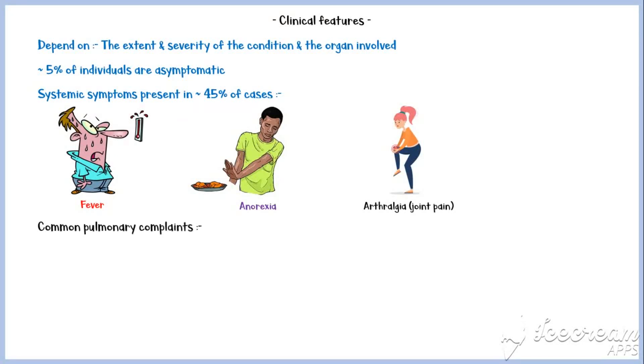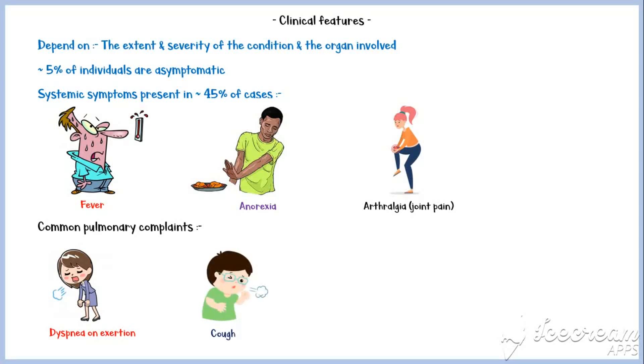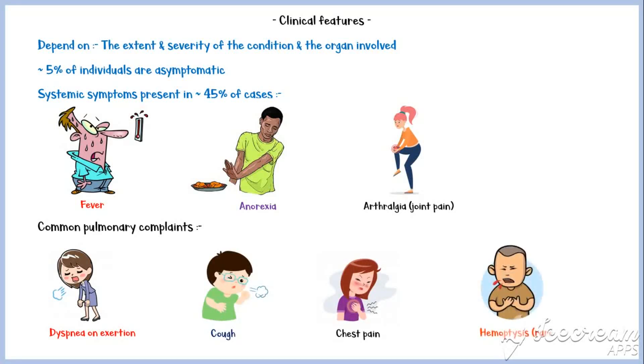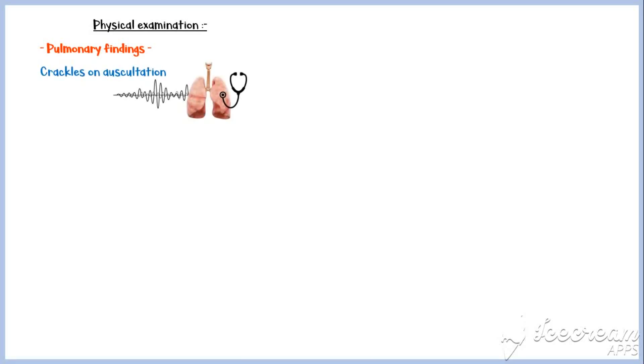Common pulmonary complaints include dyspnea on exertion, cough, chest pain, and rarely hemoptysis or coughing up blood. Physical examination findings are extremely important in sarcoidosis. Regarding pulmonary findings on examination, crackles may be found on auscultation in some individuals.